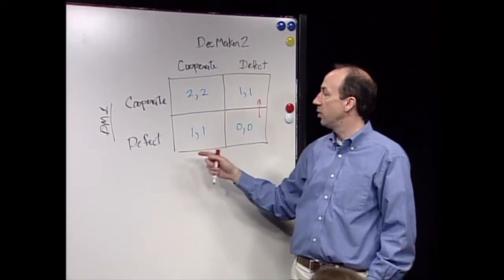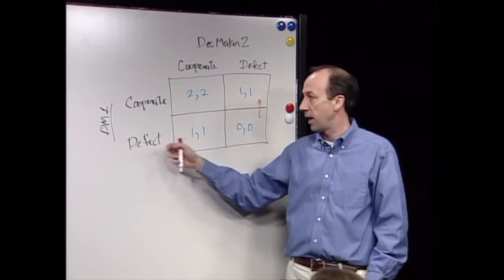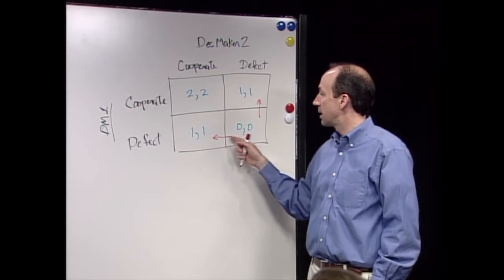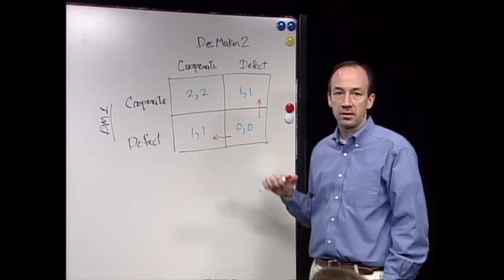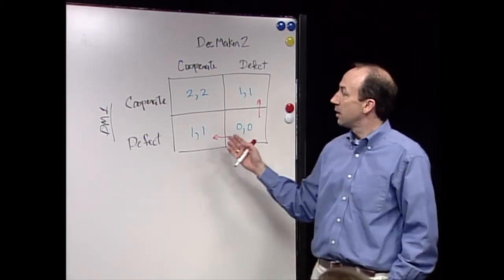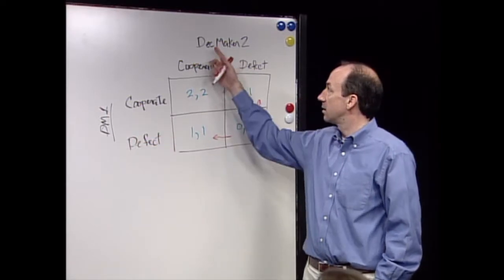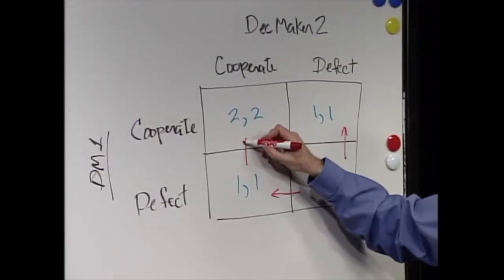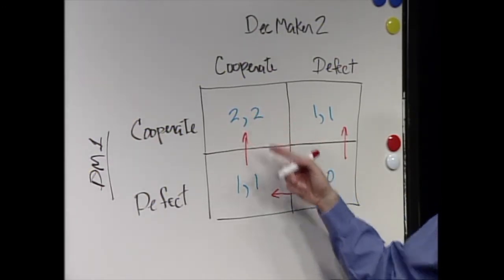And likewise, if decision-maker two knows that decision-maker one's going to defect, he would switch from defecting to cooperating, because that's more advantageous than getting the zero-zero. Now, if I was decision-maker one, and I thought decision-maker two was going to cooperate, I would also cooperate, right? Because I would rather this solution than this solution.